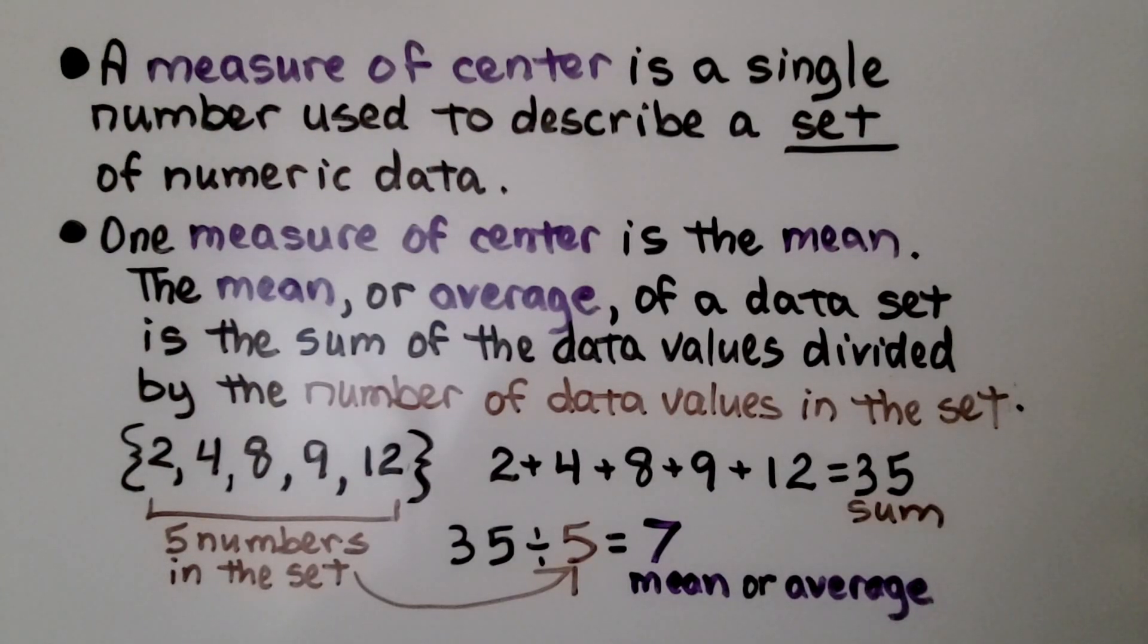A measure of center is a single number used to describe a set of numeric data. One measure of center is the mean. The mean, or average, of a data set is the sum of the data values divided by the number of data values in the set.